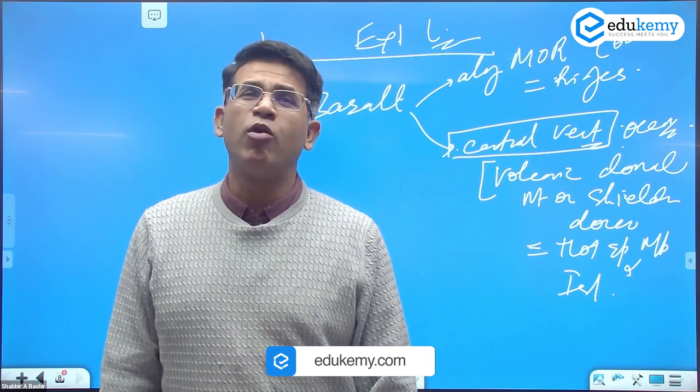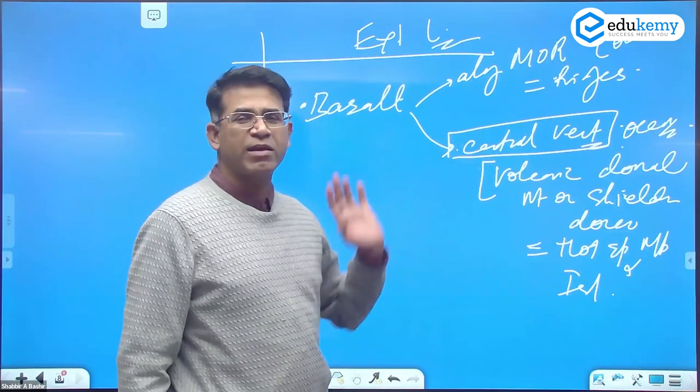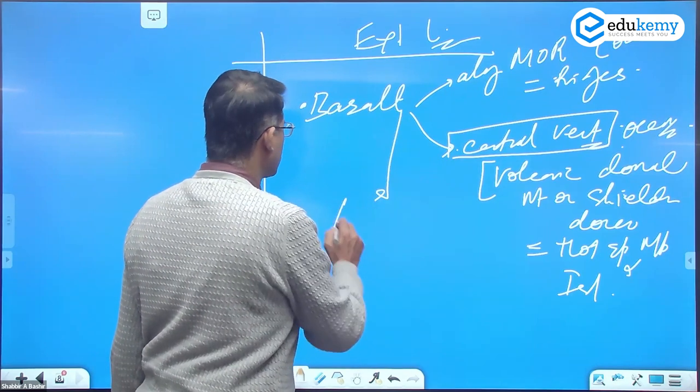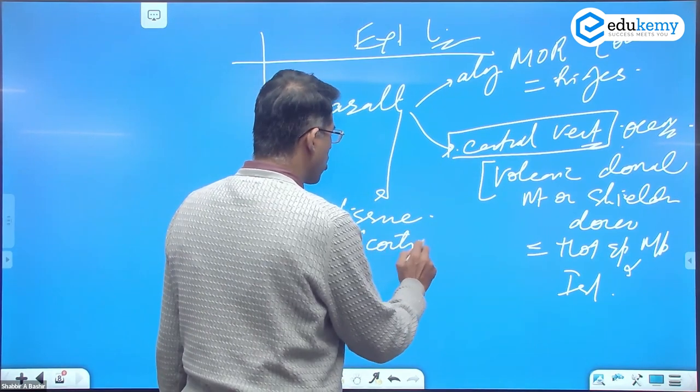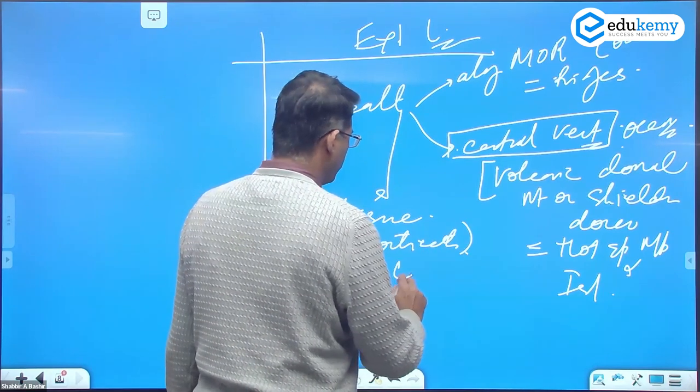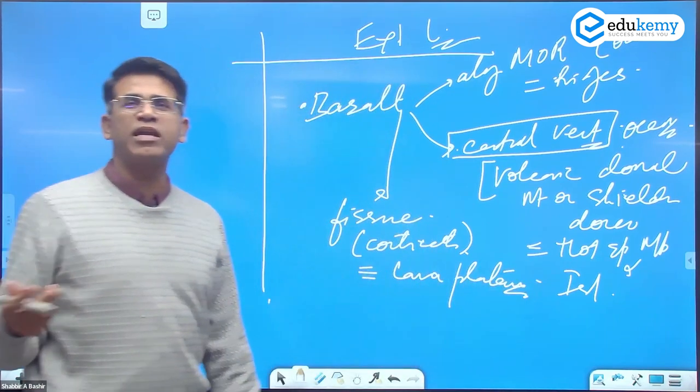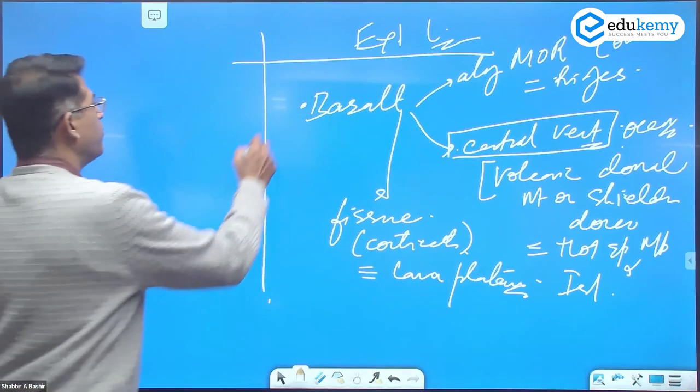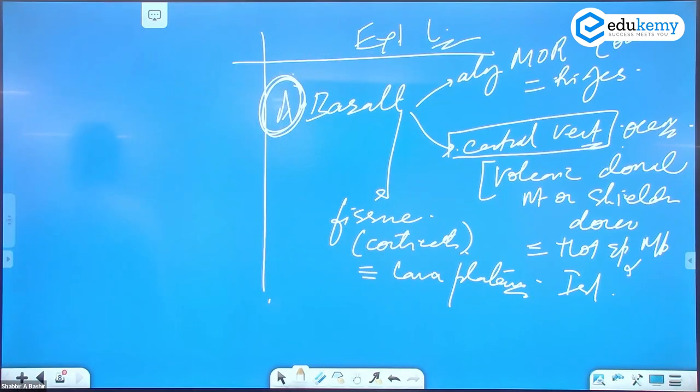So Hawaiian Islands, Azores Islands, Mauritius, Reunion Islands, yeh sare central vent type hain. And the basalt can also be the fissure types. Yeh kaha par hooga? Continents mein hoote hain. What do they form? They form lava plateaus. I gave a list of names last time. So basalt accumulations can form these type of extrusive landforms.